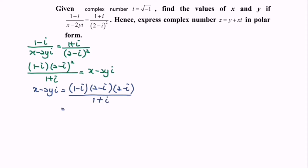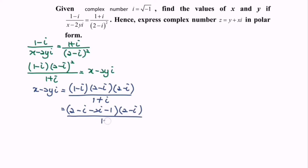Next we will have 2 minus i minus 2i minus 1, multiply with 2 minus i over 1 plus i. So simplify and we will have 1 minus 3i, multiply with 2 minus i over 1 plus i.